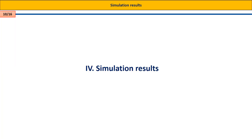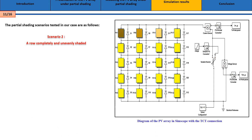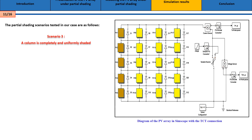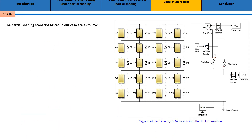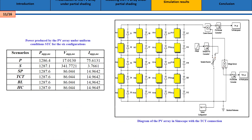Simulation results. The partial shading scenarios tested in our case are as follows: Scenario 1 — a row completely and uniformly shaded; Scenario 2 — a row completely and uniformly shaded; Scenario 4 — a column completely and uniformly shaded.